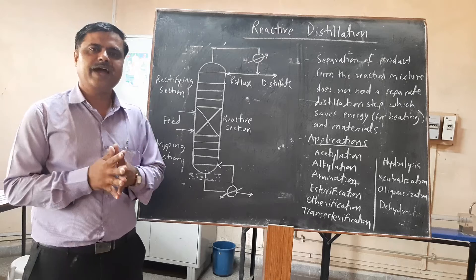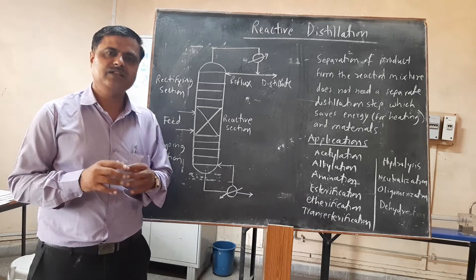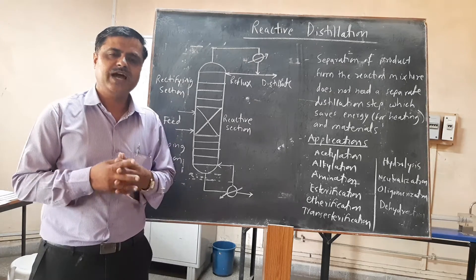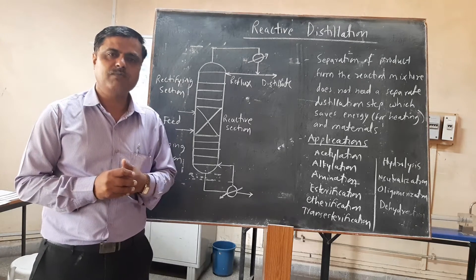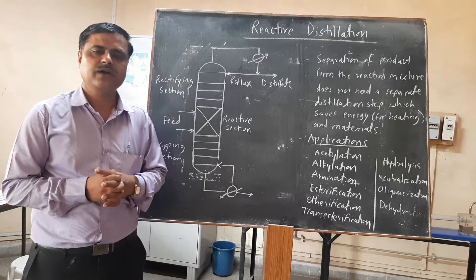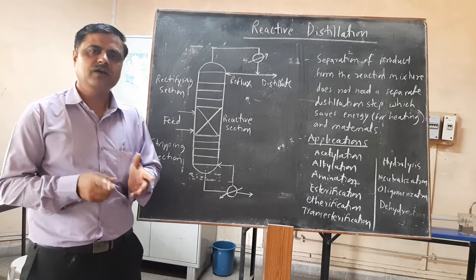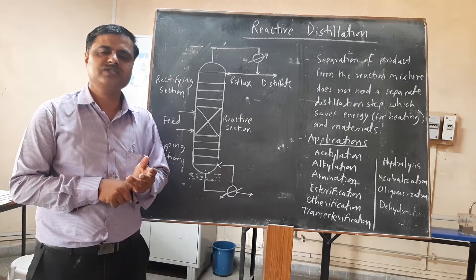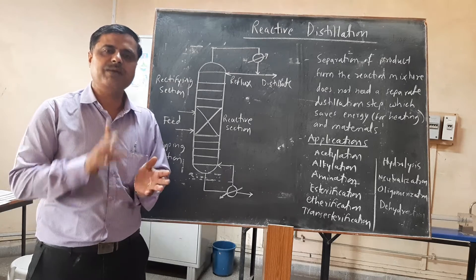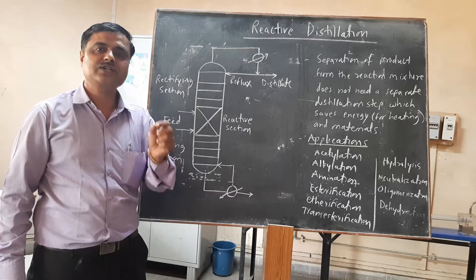We know the reactor. In the reactor, the components are fed and the reaction happens depending upon different conditions, and the product is formed — either in a batch reaction or a continuous reaction. Now the term reactive distillation means the reaction is also going to take place and the distillation process is also going to happen simultaneously. That is why it is called reactive distillation.